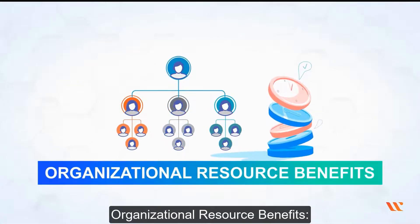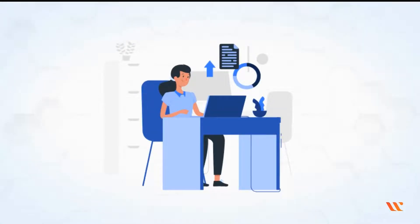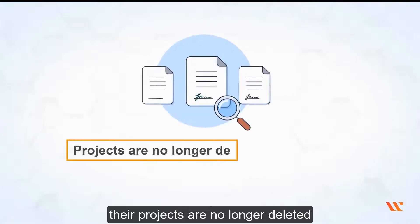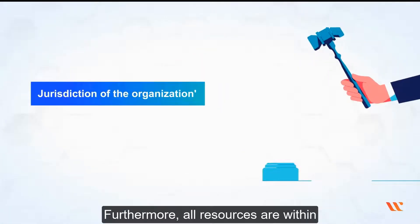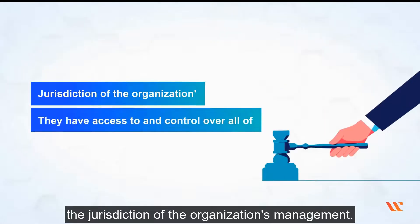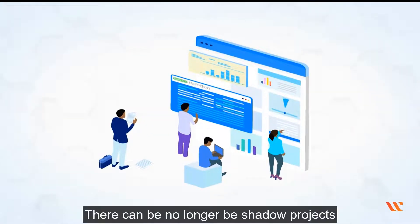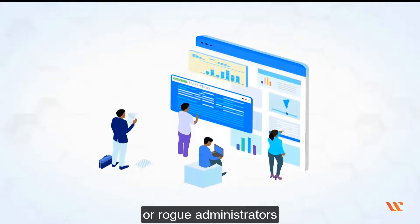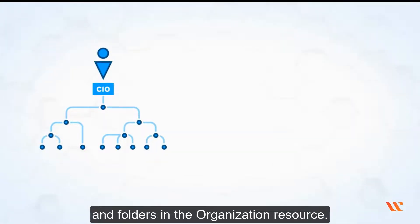Organizational Resource Benefits: Projects developed with an organization resource belong to your organization rather than the individual who generated them. This means that when a person leaves a firm, their projects are no longer deleted, but instead follow the organization's lifespan on Google Cloud. Furthermore, all resources are within the jurisdiction of the organization's management, and they have access to and control over all of your company's projects. There can no longer be shadow projects or rogue administrators as a result of this regulation. You can also assign roles at the organization level, which are passed down to all projects and folders in the organization resource.